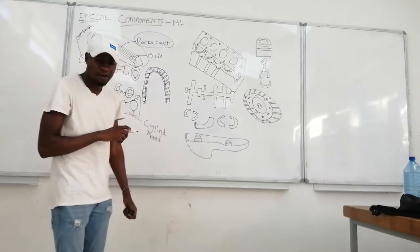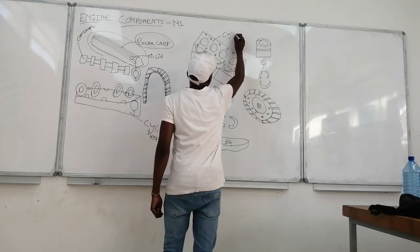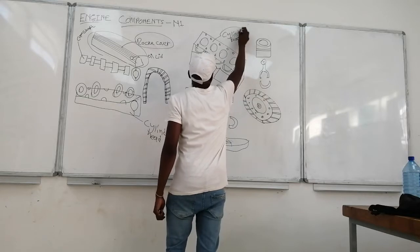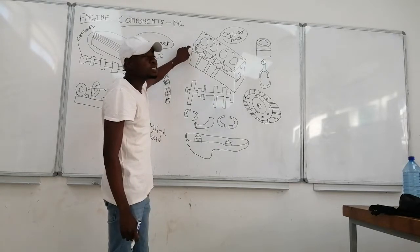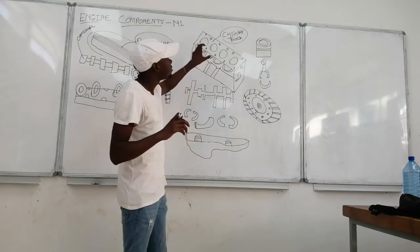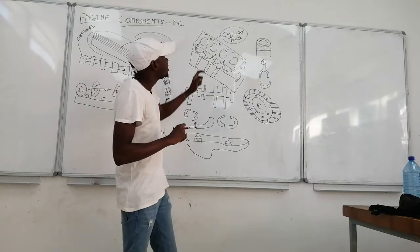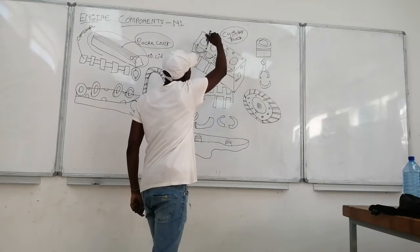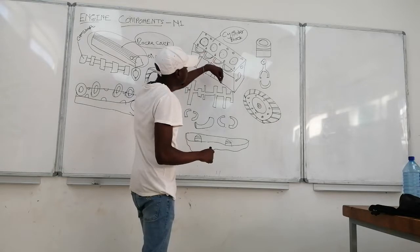We have our fourth component which is the cylinder block. This is the biggest part of the engine, and it's also the one which makes the engine heavy, because the whole block is just an aluminum block and it's very heavy. The function of the cylinder block is that the pistons are inserted here — inside is open so that they can reach the crankshaft.